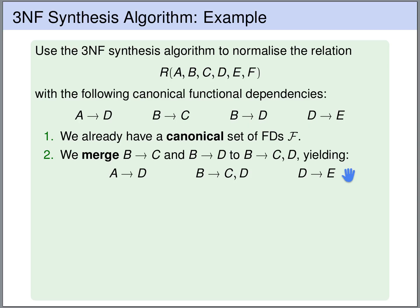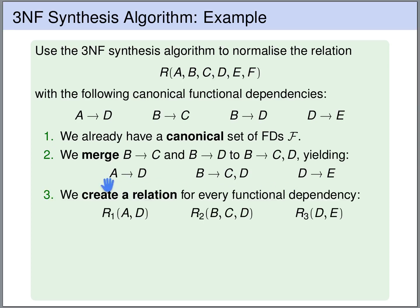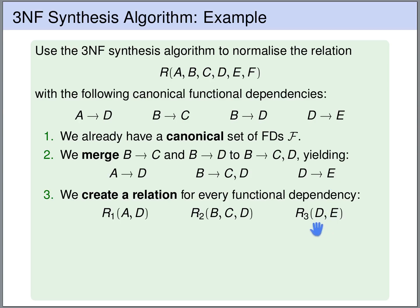Next, we will create one relation for each functional dependency. We have functional dependency A determines D, so we create a relation with the attributes A and D. We have functional dependency B uniquely determines C, D, so we create a relation with attributes B, C, D. And we have functional dependency D uniquely determines E, so we create a table with the attributes D, E.